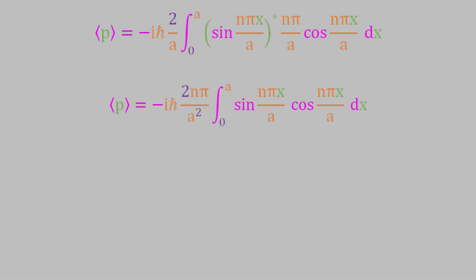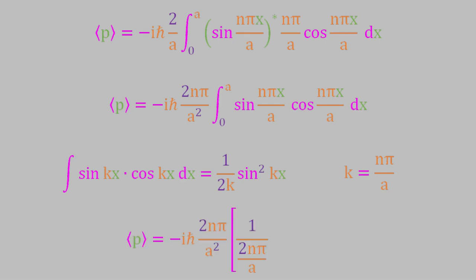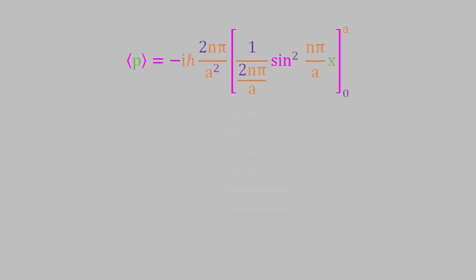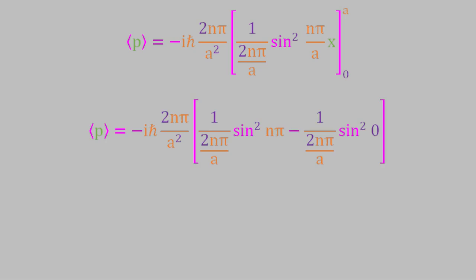The integral here has a known solution. The sine of kx times the cosine of kx is equal to 1 over 2k times the square of the sine of kx. Just like last time, k corresponds to n pi over a in our equation. So the solution to the integral is 1 over 2(n pi over a) times the square of sine(n pi x over a). When we apply the upper and lower limits, the square of sine(n pi) is 0 when n is an integer, and so is the sine of 0. So the whole expression in the square brackets is just 0, making the expectation value of the momentum also 0.